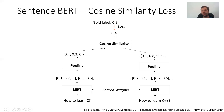As mentioned, if you just do this you get rather poor performance, so you need gold labels. For the pair 'how to learn C' and 'how to learn C++', a human annotator might assign a label of 0.9. You can then compute the MSE loss between the gold label 0.9 and the cosine similarity of 0.4, and do backpropagation. There are two ways to use BERT here — sometimes people use independent BERT networks, but usually it makes sense to share the weights, so both inputs pass through the exact same BERT network.